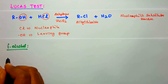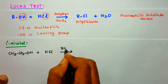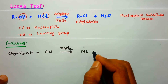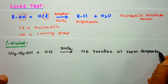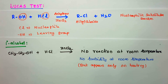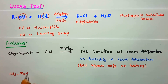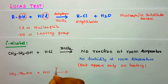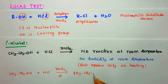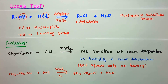For primary alcohol, we use ethanol as an example. When ethanol (CH3-CH2-OH) reacts with hydrochloric acid and anhydrous zinc chloride, there is no reaction at room temperature — no turbidity appears at room temperature. Turbidity appears only on heating, forming CH3-CH2-Cl (ethyl chloride) by elimination of water. This way we can easily differentiate primary, secondary, or tertiary alcohol.